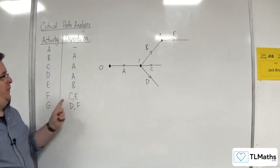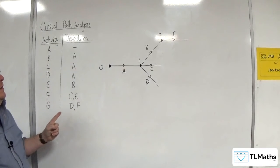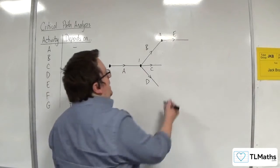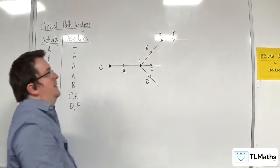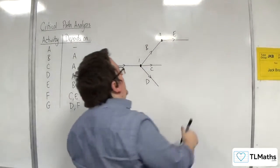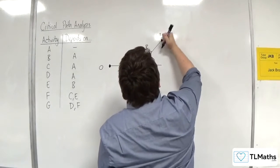Now F relies on both C and E. I could have C coming up here and bending round and joining it, but to avoid that, to try and keep nice straight lines, I'm going to redraw E.